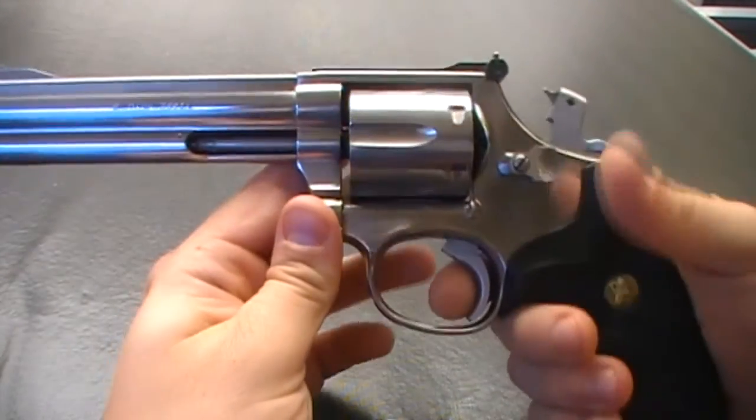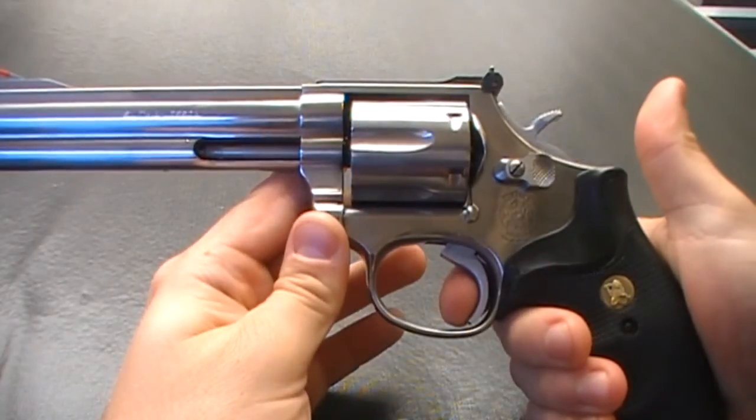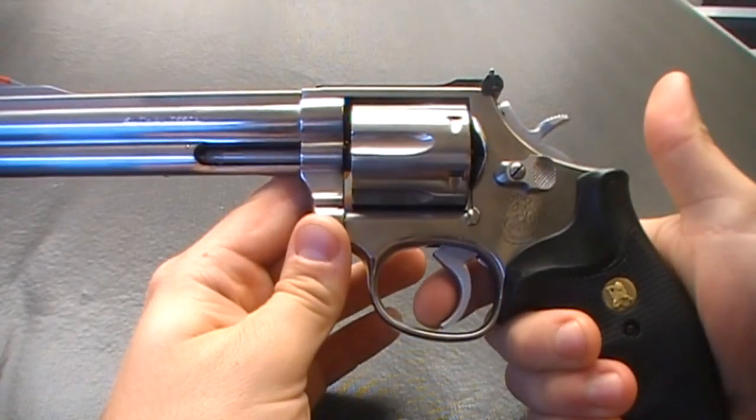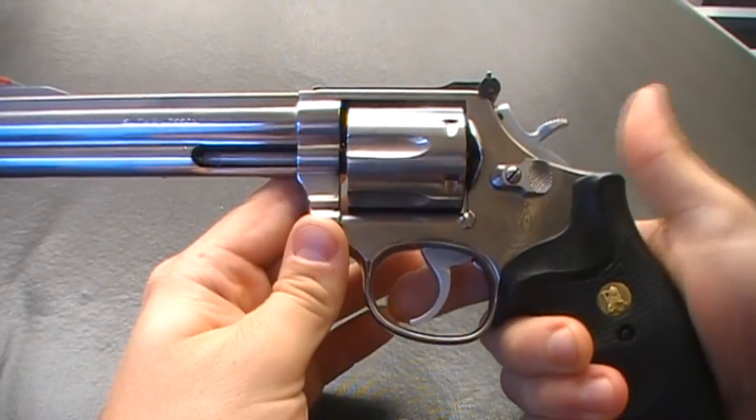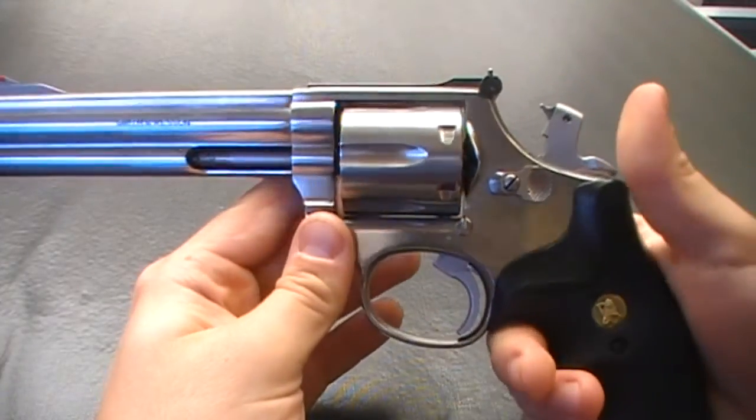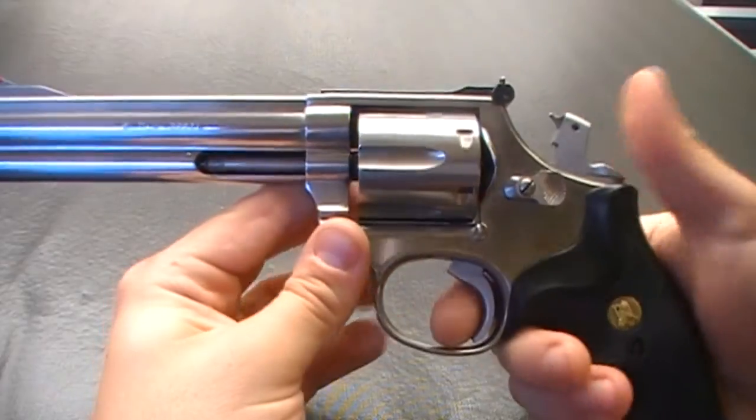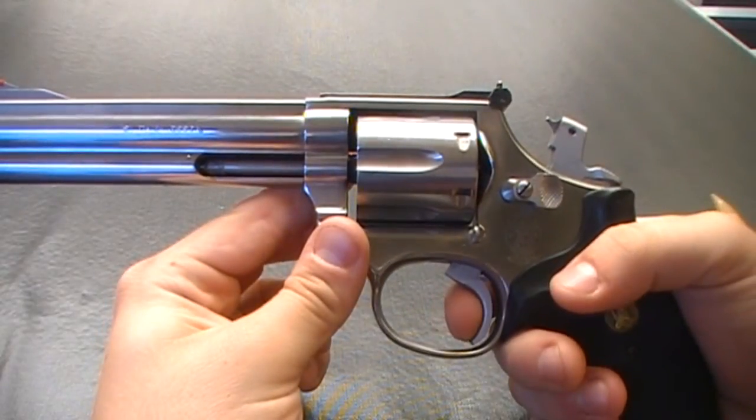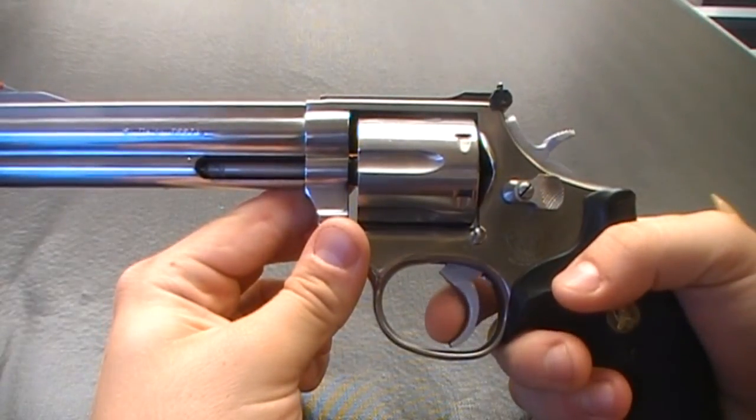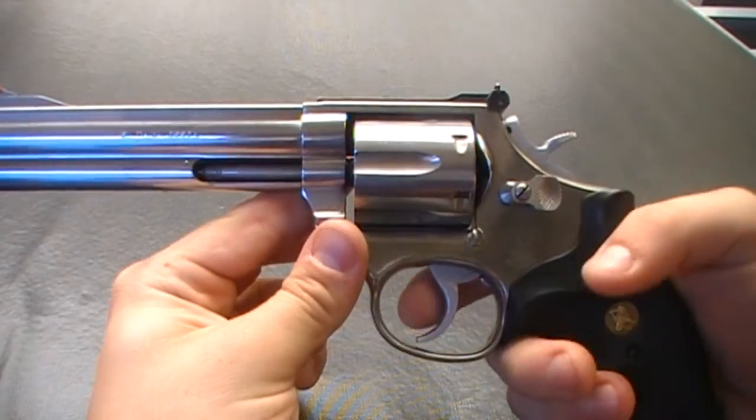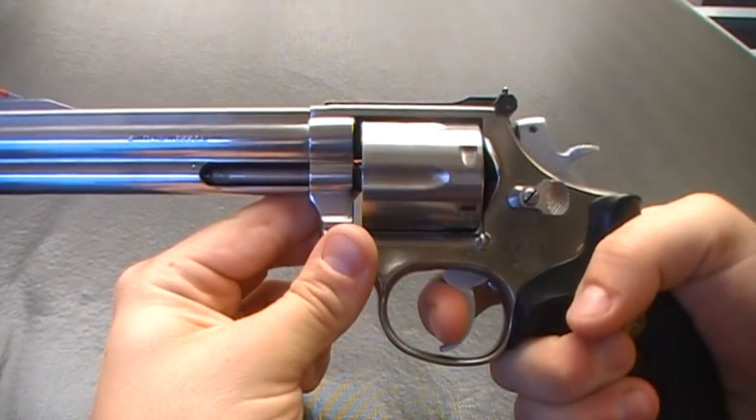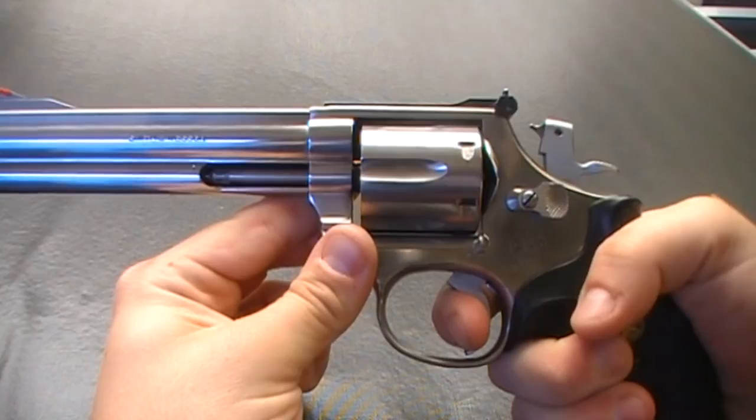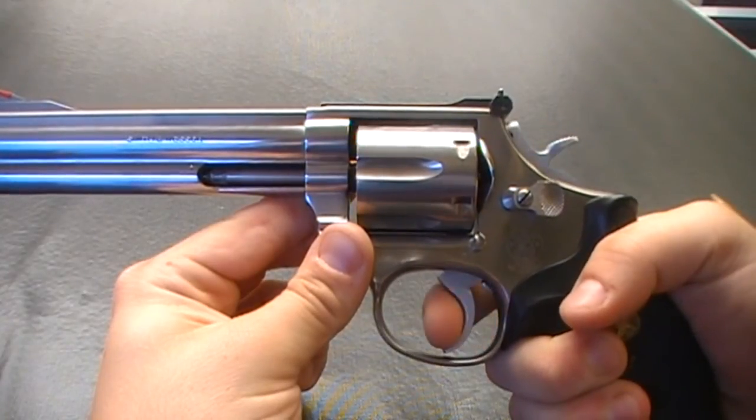The single action trigger pull. It is so light. As you can see this is the reset. Right at the end pretty much. You can see the cylinder rotates on every shot. Double action just by pulling the trigger. The cylinder rotates the next round. And goes off.